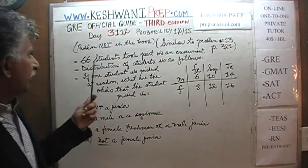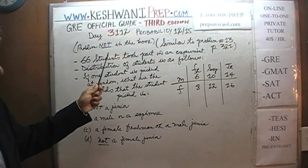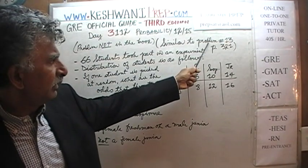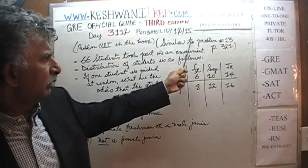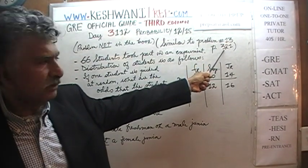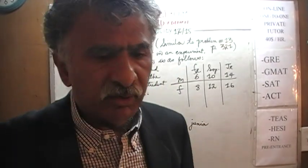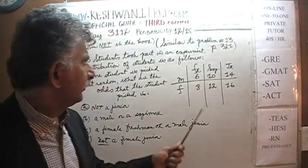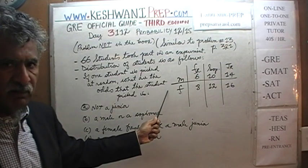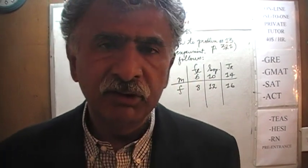This problem on the blackboard is not in the book — don't try to look for it. However, a very similar problem exists: it is problem number 13, which you will find on page 321. After we finish this problem, it would be a good idea for you to try number 13 yourself. This blackboard problem is actually similar to how problem 13 appeared in the first and second editions.